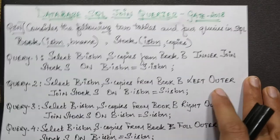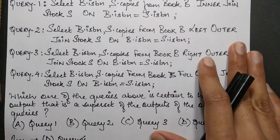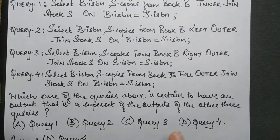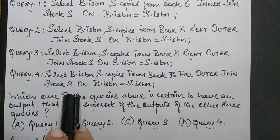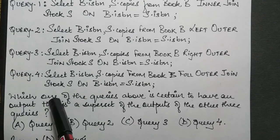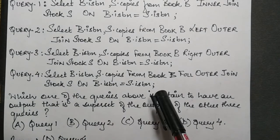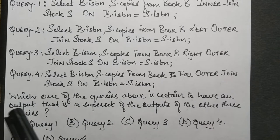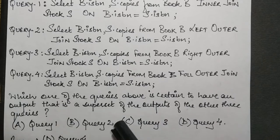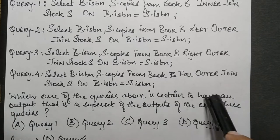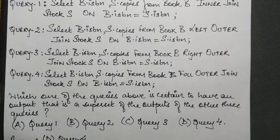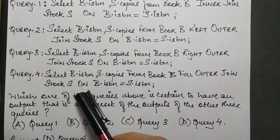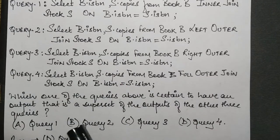Now they state that there are four queries given and the question asks which one of the queries above is certain to have an output which is a superset of the outputs of the other three queries. The question is very clear: which one of the queries produces the set of tuples which is a superset of the rest of the three.